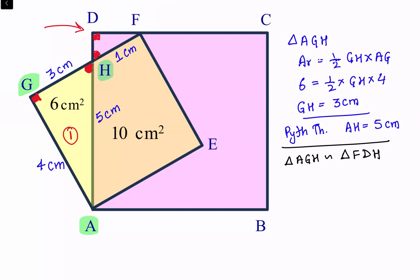So if we get the value of DH, we know AH is 5 centimeter and we can get value of DH. Then we'll get the side of the bigger square and we can get the area. So let's find DH. In the small triangle I know the value of FH and we have to find the value of DH.